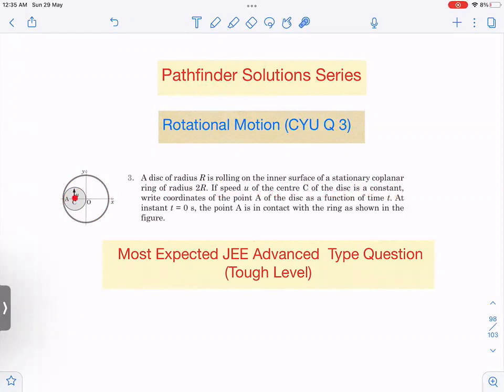Then write coordinates of point A. This is point A, the point which is in contact, the point of the disk which is in contact with the ring. At time t as a function of time t, we need to find out the coordinates of this, not the velocity, sorry, coordinates of this. At instant t equal to zero, the point is in contact with the ring. So that is clear from the diagram.